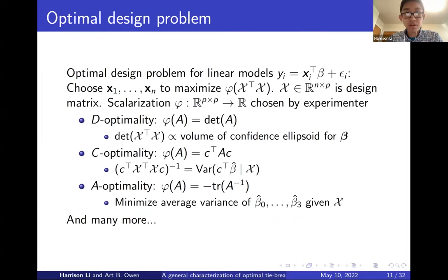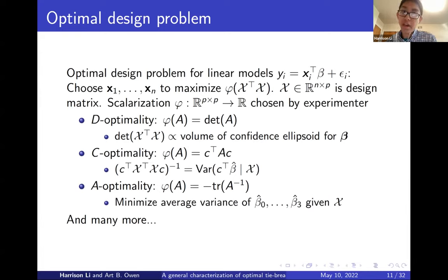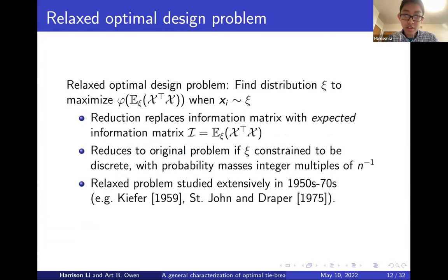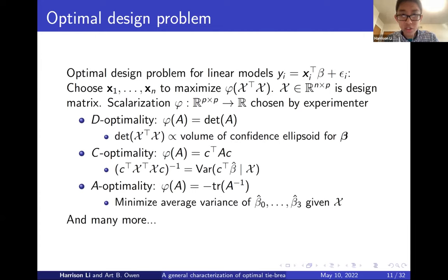Going back several decades to the optimal design literature for linear models, popular between the 1950s and 1970s: if you have a standard linear model y equals x transpose beta plus epsilon, the optimal design problem is to choose your covariate vectors x1 to xn to maximize some scalar function phi of X transpose X, where X is the n-by-p matrix of all predictors. Common choices of scalarization include D-optimality, where phi is the determinant — the most popular — plus C-optimality, A-optimality, and others.